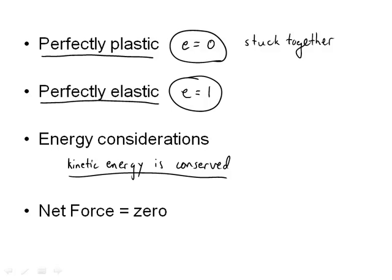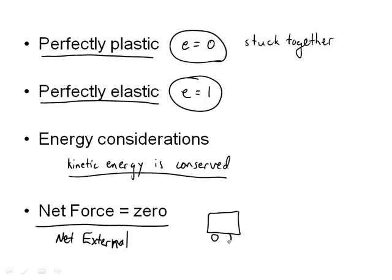Many of our collisions we'll consider to be perfectly elastic. The other thing I want to make sure we understand is that momentum is conserved when the net external force is equal to zero. So there could be a gravitational force acting on a cart — that gravitational force is down, and there's a normal force up. If those two forces cancel out to zero, the cart can have a collision with another cart and momentum will still be conserved.